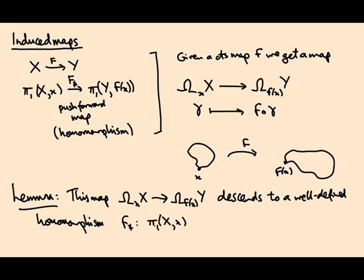In other words, you have to check that if you have two loops that are homotopic, then they give you homotopic loops after applying this map. And you have to check that it's a homomorphism.